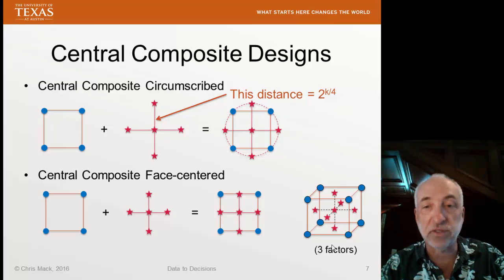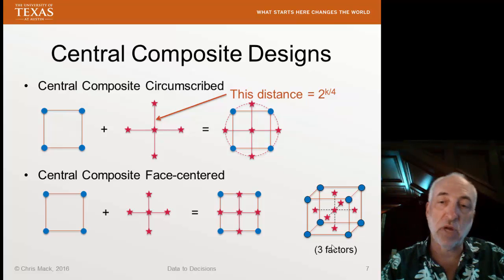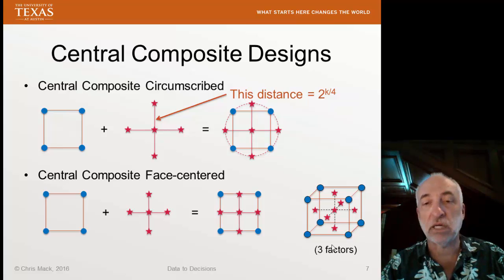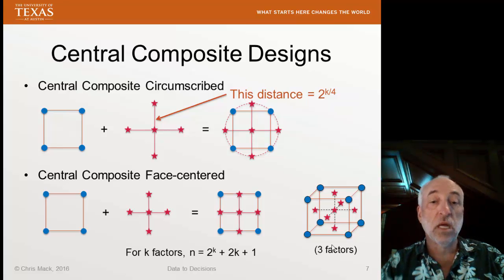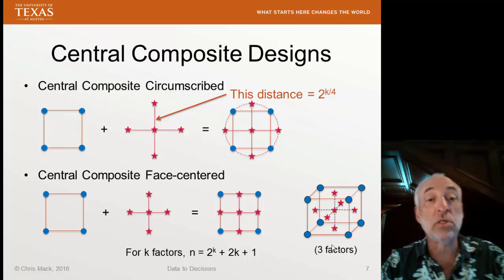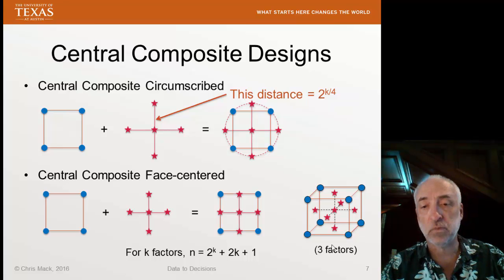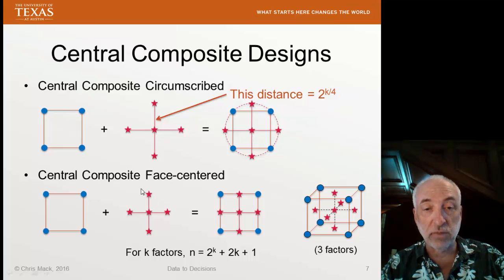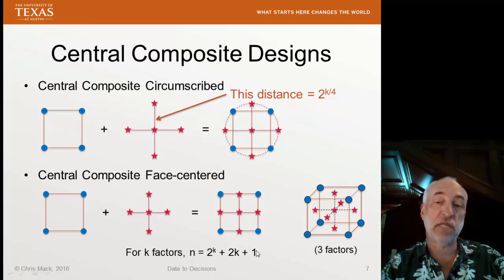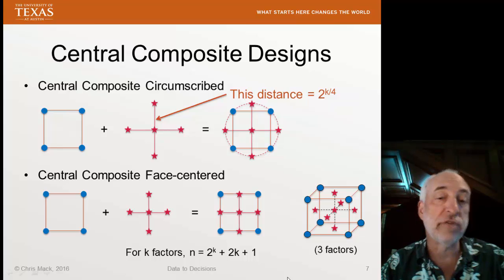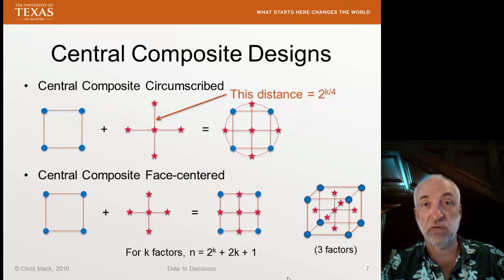Central composite designs reduce the number of experiments we have to run to fill out our experimental space. The number of data points is 2 to the k — the full factorial with two levels — plus 2k axial star points, plus one for the center. If we have repeated center points, we add the number of repeats to get the total number of experimental data points measured.